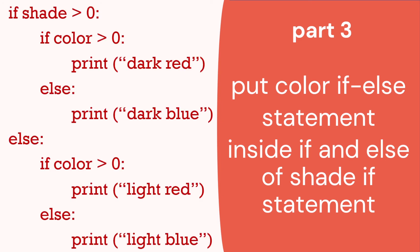Here we have: if shade is greater than zero, we have an if-else. Then if color is greater than zero, instead of just red and blue, at the top we have dark red and dark blue, and at the bottom we have light red and light blue. So this is two if-else statements nested inside an if-else statement.